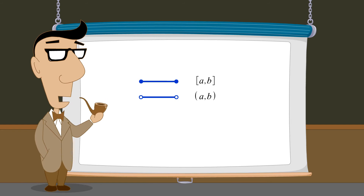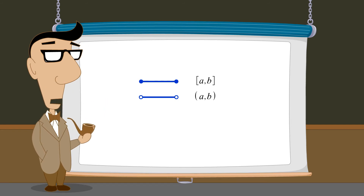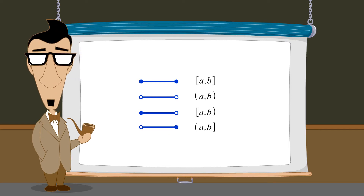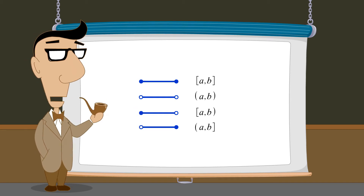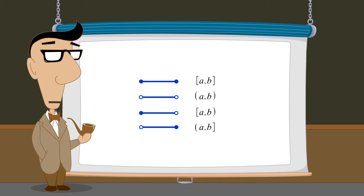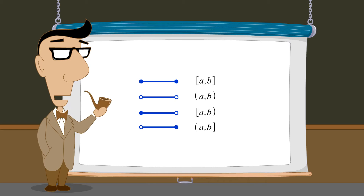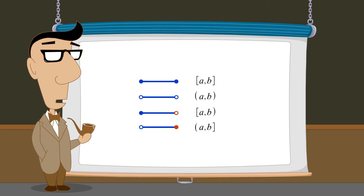It is also possible for one endpoint to be included and the other excluded. If the left endpoint is included or excluded, the interval is said to be left closed or left open. And if the right endpoint is included or excluded, the interval is right closed or right open.